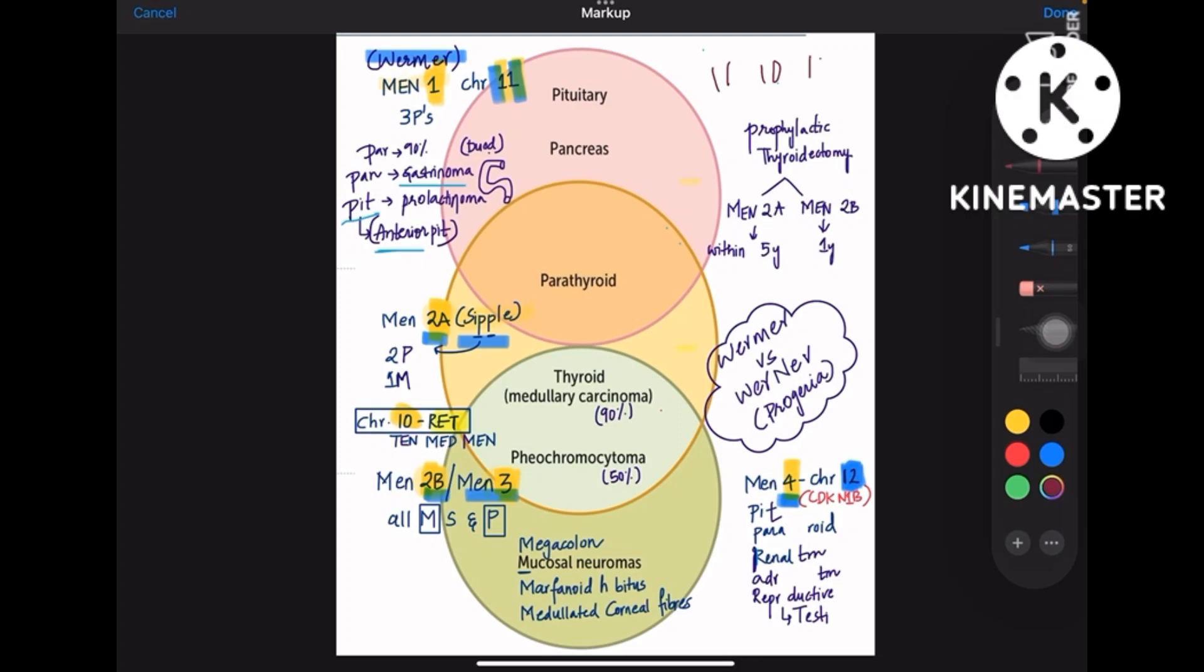So these are the chromosomes in that order: MEN1, MEN2A, 2B, and MEN4. Now coming to the discussion of individual MEN syndromes, look at the circle guys.